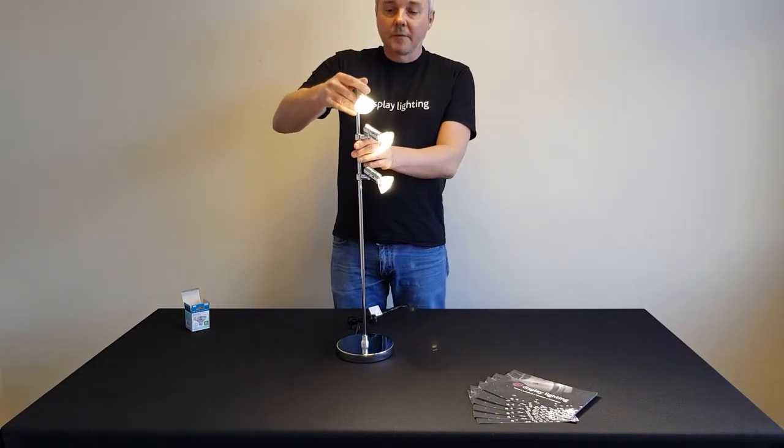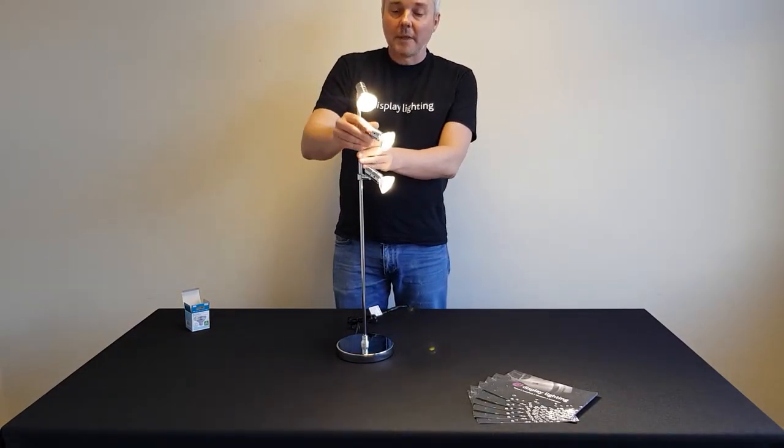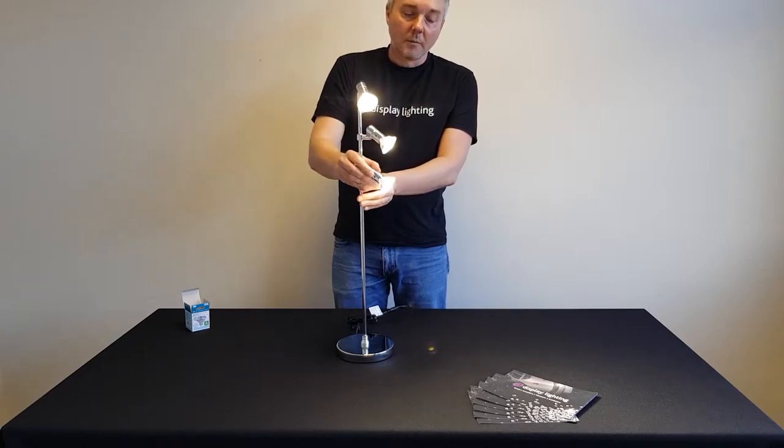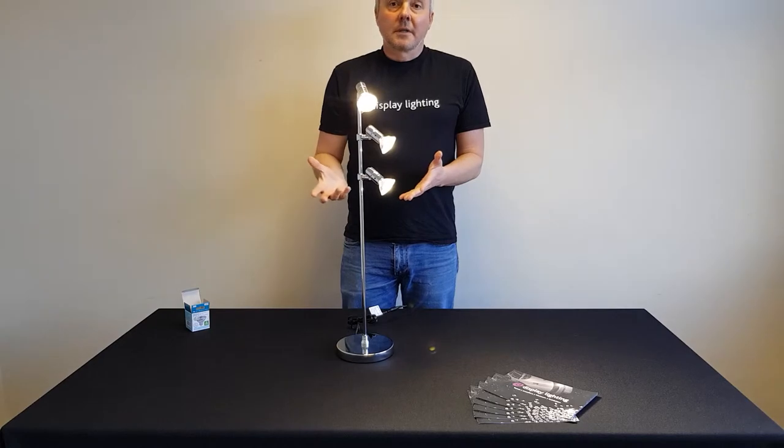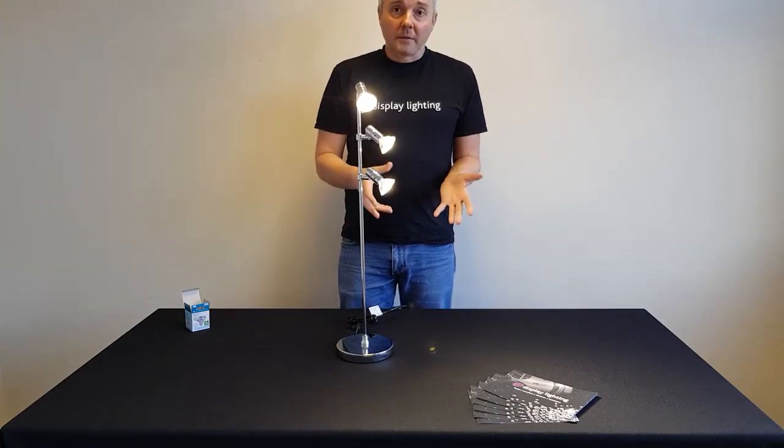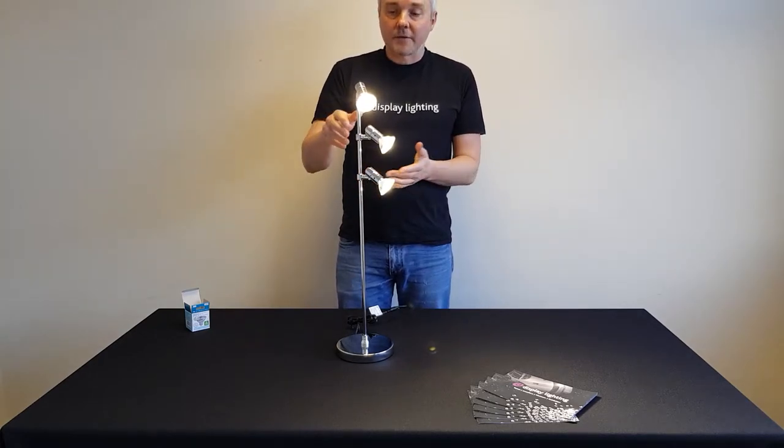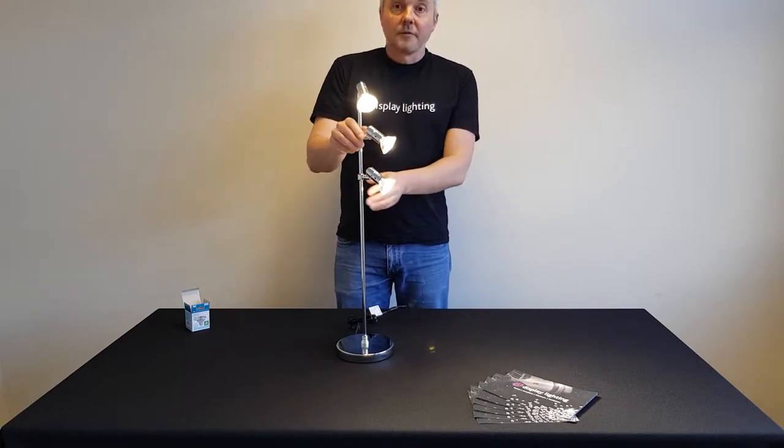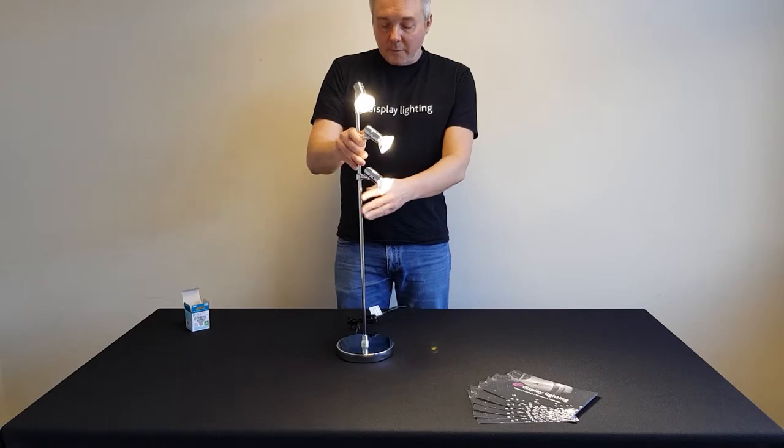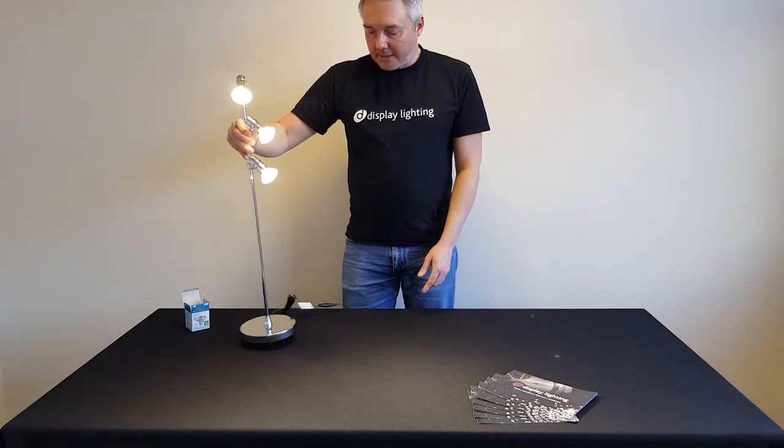These lamps are the 4000K version, which is the cooler white. There's also a warmer white which may be better for products that are warmer metals like gold jewelry. But we find that the cool white lamps always work best for silver jewelry and similar products like crystal.